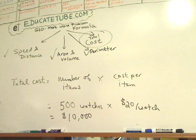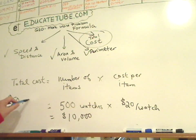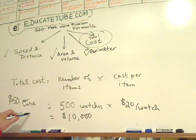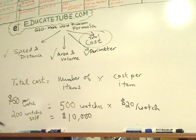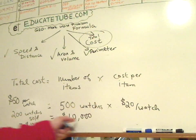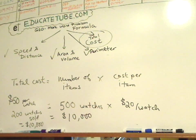Let's say if you sold them for $50 per watch, and assume that you sold 200 watches. If you think about it, 200 times 50 gives you $10,000. So if you sold 200 watches, you would have made back all the money you invested. And you have 300 watches to go, and whatever you sold the next 300 watches for, that's your profit — that's how much money you'll be making.